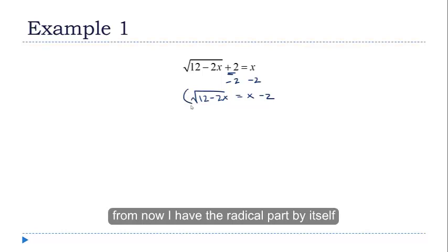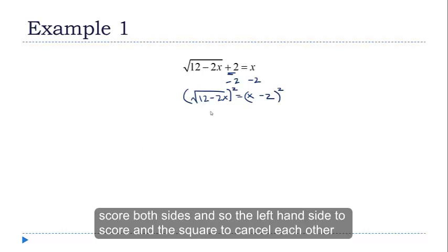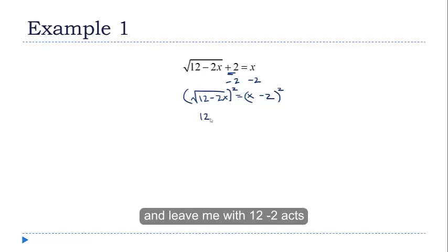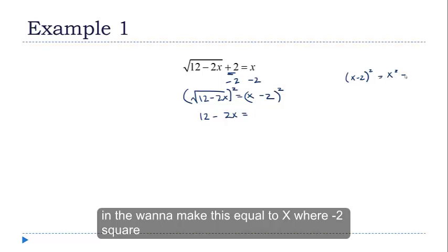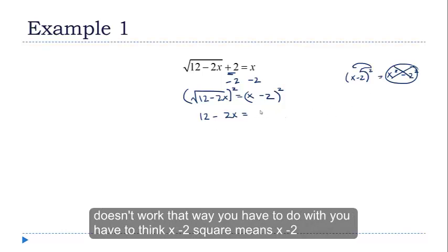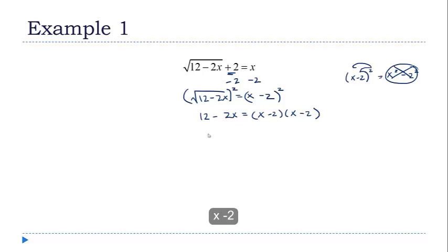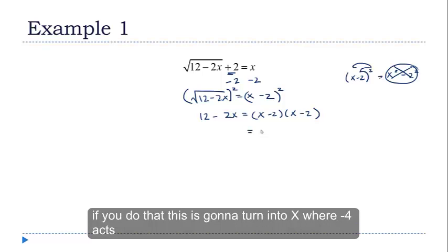Now I have the radical part by itself, which means I can jump in and square both sides. On the left-hand side, the square root and the square cancel each other and leave me with 12 minus 2x. On the right-hand side, you have to be careful. Students often want to make this equal to x squared minus 2 squared — distributing the exponent into the parentheses — but you cannot do this. You have to think of x minus 2 squared as x minus 2 times x minus 2. Multiplying this out using FOIL gives x squared minus 4x plus 4.